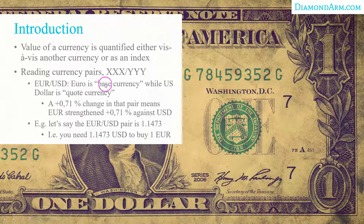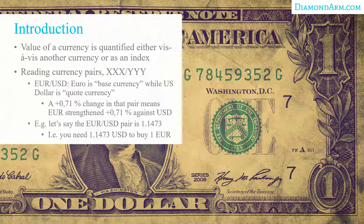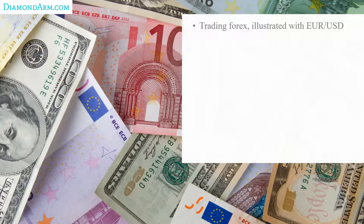Whether a currency is the base or quote is often a result of preferring a smaller number to reflect the pair. Hence, if you have a currency that has gone through huge inflation, you don't want some huge number — you can solve that by flipping who is the base currency.